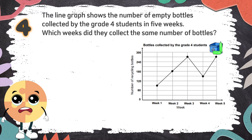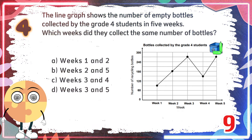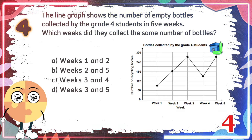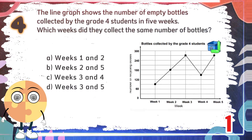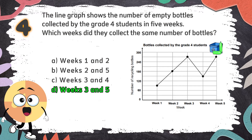Number 4. The line graph shows the number of empty bottles collected by the grade four students in 5 weeks. Which weeks did they collect the same number of bottles? The choices are A. Weeks 1 and 2, B. Weeks 2 and 5, C. Weeks 3 and 4, D. Weeks 3 and 5. The correct answer is D. Weeks 3 and 5.